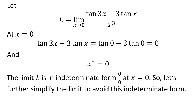At x equal to 0, tangent of 3 times x minus 3 times tangent of x is equal to 0, and cube of x is equal to 0, so the limit is the indeterminate form 0 upon 0. Let us further simplify the limit to avoid this indeterminate form.